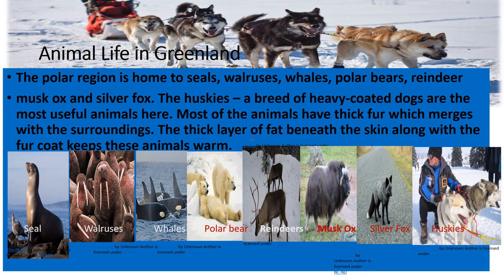Animal life in Greenland: the polar region is home to seals, walruses, whales, polar bears, reindeer, musk ox, and silver fox. Here are pictures of such animals. Most of the animals have thick fat which blends with the surroundings. The huskies, the breed of heavy-coated dogs, are the most useful animals here — they pull the sledges. The thick layer of fat beneath the skin along with the fur coat keeps these animals warm.